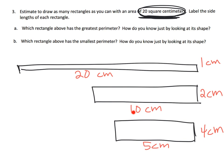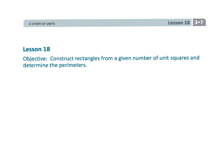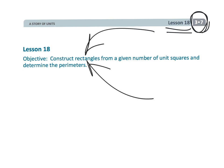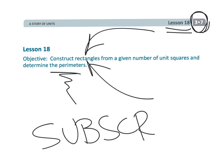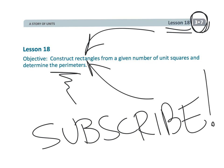I'll let you figure out which rectangle has the greatest perimeter and which has the smallest. That wraps up this fun lesson — Grade 3, Module 7, Lesson 18 — where students use tiles to create rectangles and find their perimeters. Don't forget to consider subscribing to the channel.